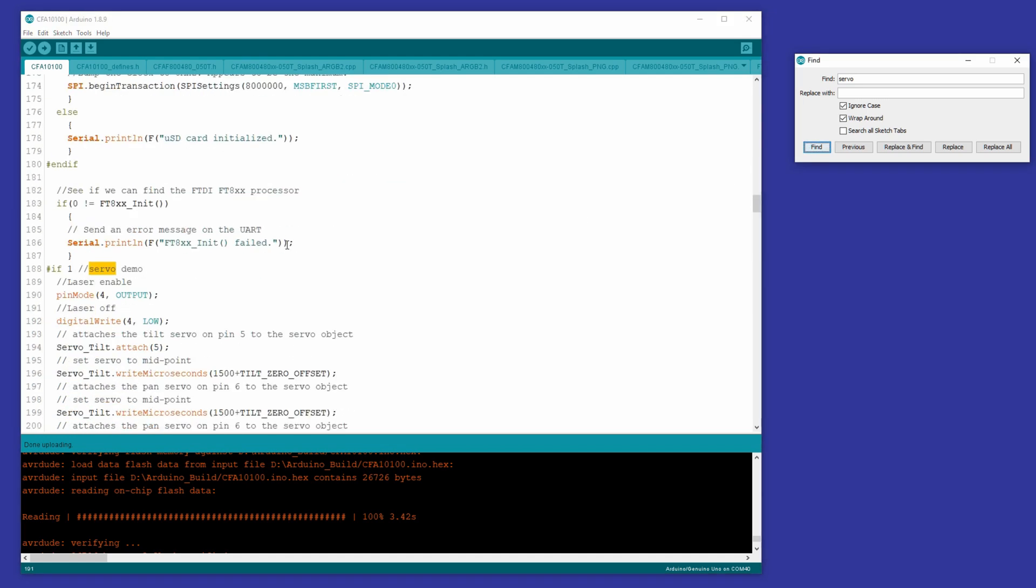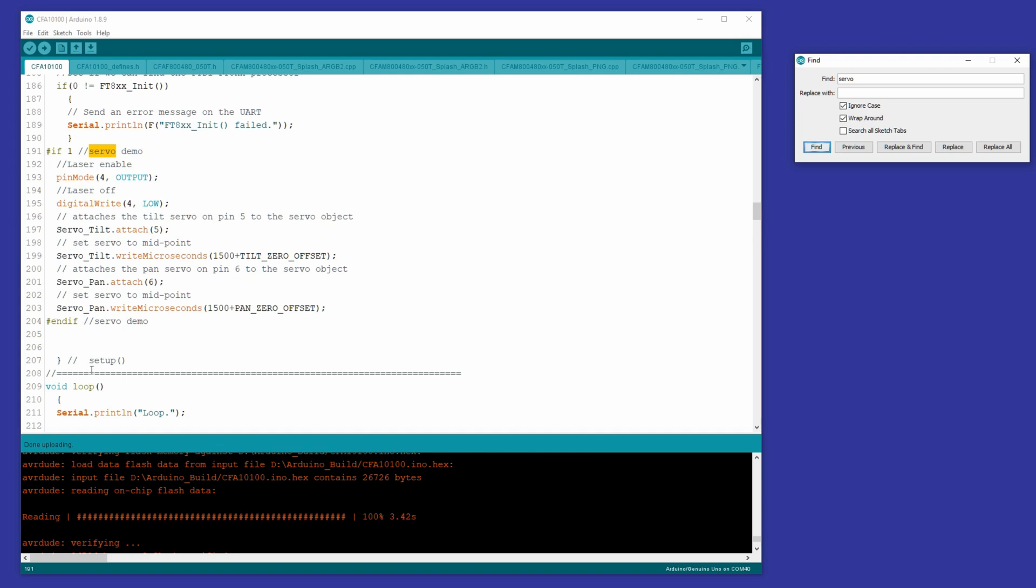So let's look for the next instance here, and this is inside the setup function. And the setup function does various things to get the FTDI display all happy, but we just, at the bottom of that, we basically take pin four, set it to an output. We'll use that for our laser enable. And then just to make sure everything's initialized, we'll turn the laser off.